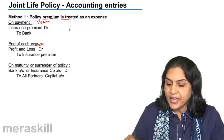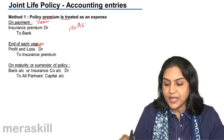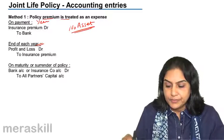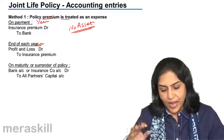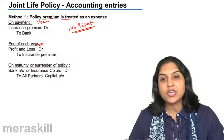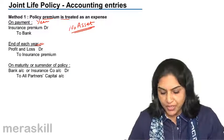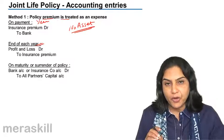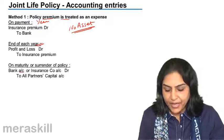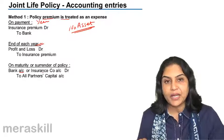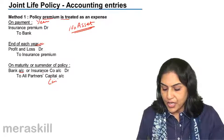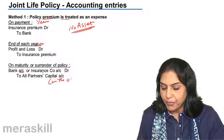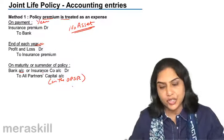So we do not have any asset — nothing in our books. On maturity of the policy, we get money: bank account debit or insurance company account debit to all the partners' capital accounts in the old profit sharing ratio.